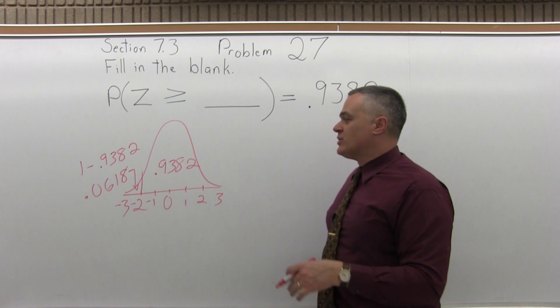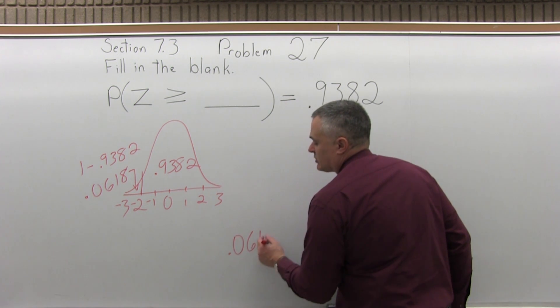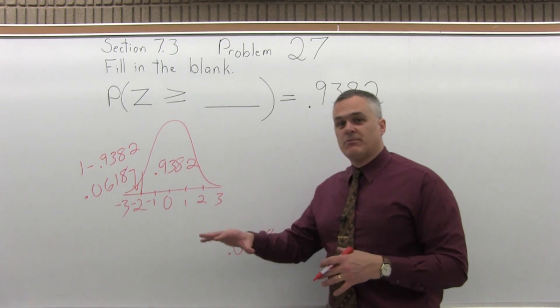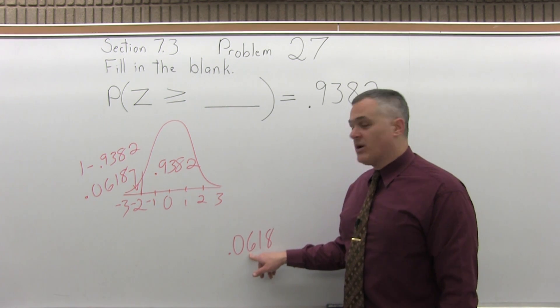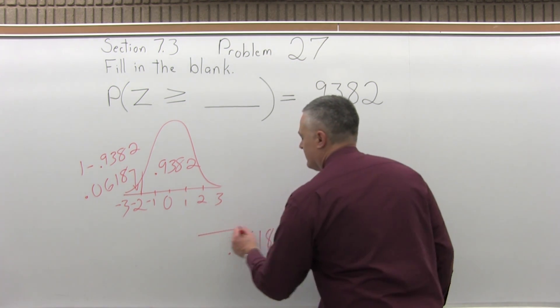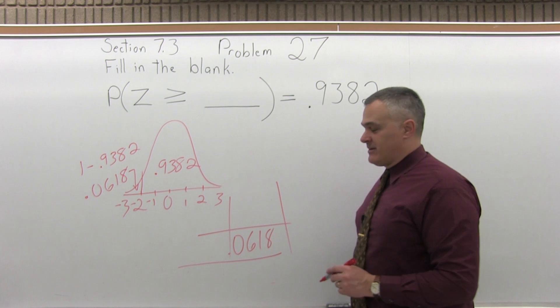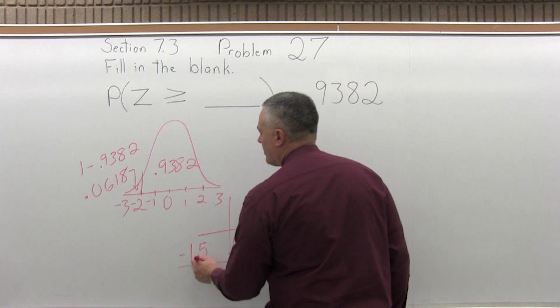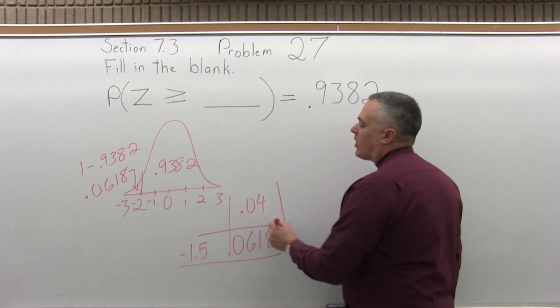That will show up in the chart. So in the middle of the chart, look for .0618. And the chart is set up in order. The numbers in the middle do get bigger progressively. So whatever number you start at, it will get a little bigger or a little smaller and keep going until you get to .0618. And when you do find it, see what row and what column it shows up in. So if you find .0618, you'll notice it's in the negative 1.5 row and it's in the .04 column.